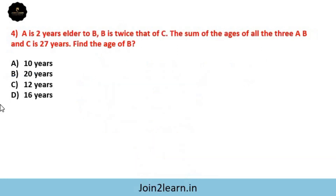Next problem: A is 2 years elder to B. B is twice that of C. The sum of the ages of all three — A, B, C — is 27 years. Find the age of B. First, write down the data: A plus B plus C is equal to 27 years.